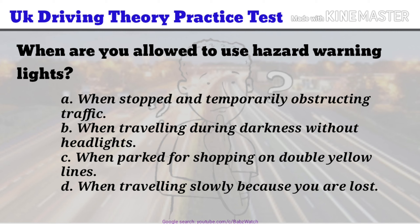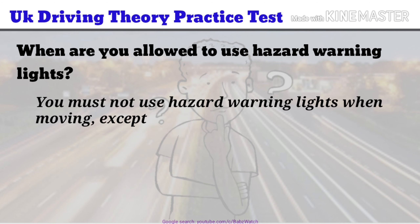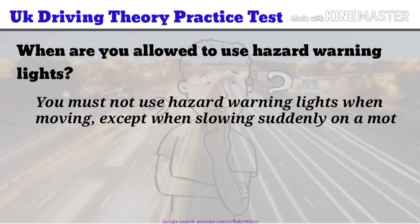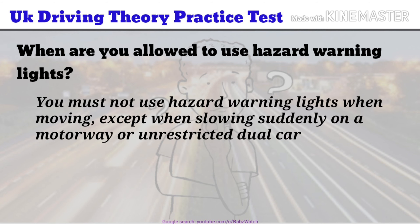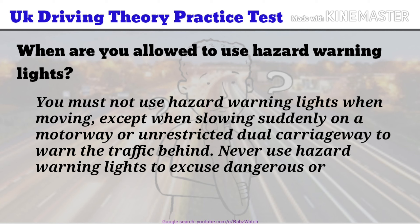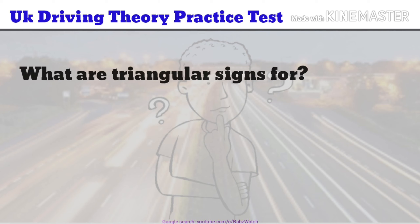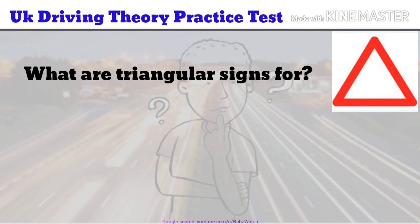When travelling slowly because you're lost. You must not use hazard warning lights when moving, except when slowing suddenly on a motorway or unrestricted dual carriageway to warn the traffic behind. Never use hazard warning lights to excuse dangerous or illegal parking.